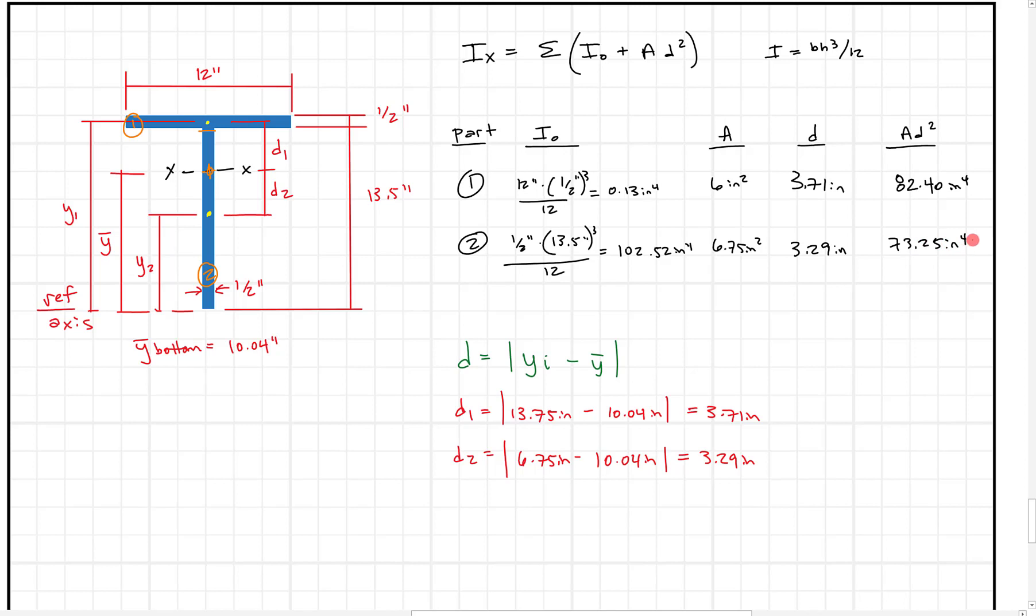So next, what we have to do is, again, when I solve my parallel axis theorem, I actually like to solve it as the sum of I naught plus the sum of Ad squared. It's easier with this table because I already have the sum of I naught right here. And I can add 0.13 to 102.52. Really doesn't make a big difference, but I'll write it down. 102.64 inches to the fourth. And then I can do the same thing over here and find sum Ad squared. And when I add these two together, I get 155.65 inches to the fourth.